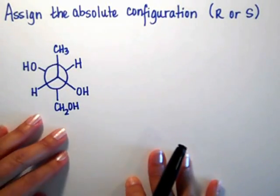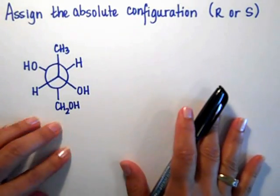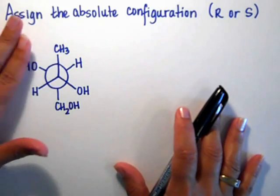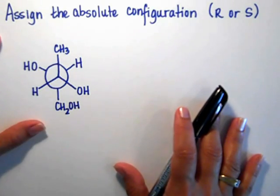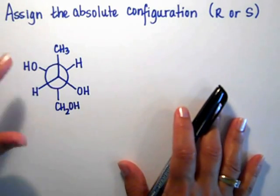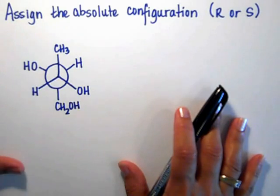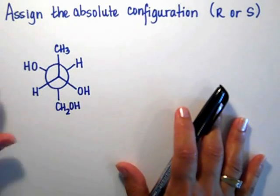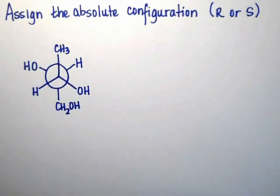This one is a special case and you need to pay very close attention to what we're going to be doing here because they're giving us the Newman projection and we need to find out whether the chiral centers are R or S. We need to assign the absolute configuration.